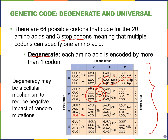Degeneracy is important because it's thought to be a mechanism that evolved to reduce the negative impact of random mutations. If we have a mutation in the third nucleotide of a codon, it's okay because all the codons shown here — varying only in that third position — still encode the same amino acid, such as leucine or threonine. So degeneracy means each amino acid is encoded by more than one codon, and it likely protects us from random mutations.